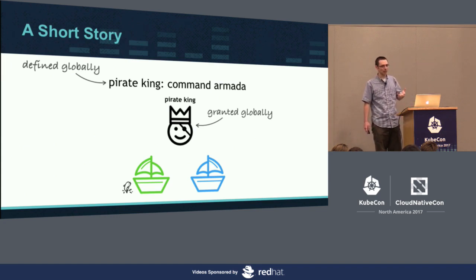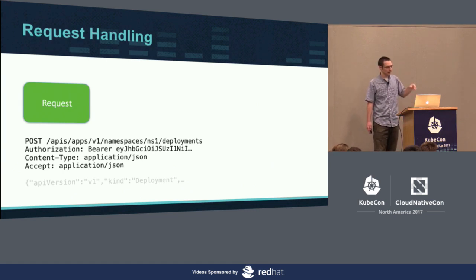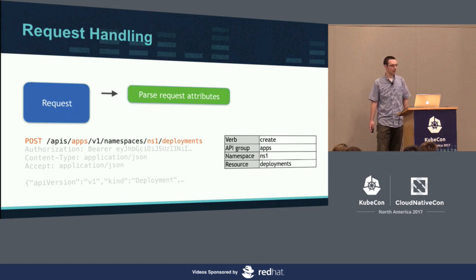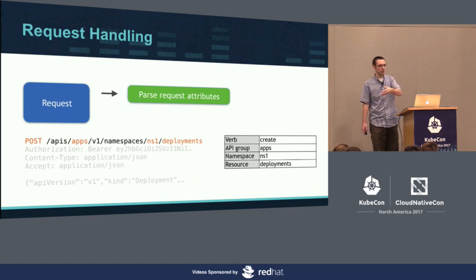Let's look at an actual API request and the types of questions it would ask of the authorization layer. A request comes into the API server — it's got an HTTP method, a URL, some headers, and a body. The first thing we do is parse out request attributes from the verb, the method, and the URL. The POST method maps to the create verb. We extract the apps API group, the namespace, and the resource. This set of request attributes becomes the input to the authorizer.